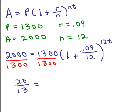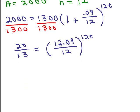Now I have to simplify inside this parentheses. I could write 1 as 12 over 12 so I'd have a common denominator. That means in the fraction I would have 12.09 over 12 to the 12T. So this is what I have so far.